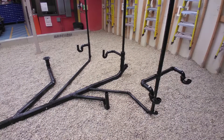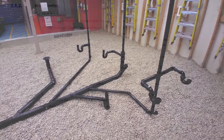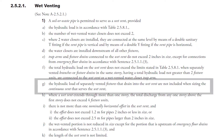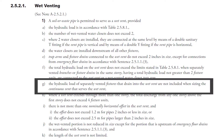For our next example, we have a system that is considerably more complicated, and we have a special code clause to follow: clause 2521-1G. The hydraulic load of separately vented fixtures that drain into the wet vent are not included when sizing the continuous vent that serves the wet vent.